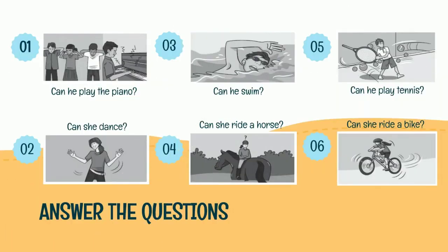Now for the exercise, answer the following questions. Number one: Can he play the piano? Number two: Can she dance? Number three: Can he swim? Number four: Can she ride the horse? Number five: Can he play tennis? Number six: Can she ride a bike? Untuk tugasnya, kalian salin jawabannya saja ya di buku catatan kalian. Good luck soleh-soleha!